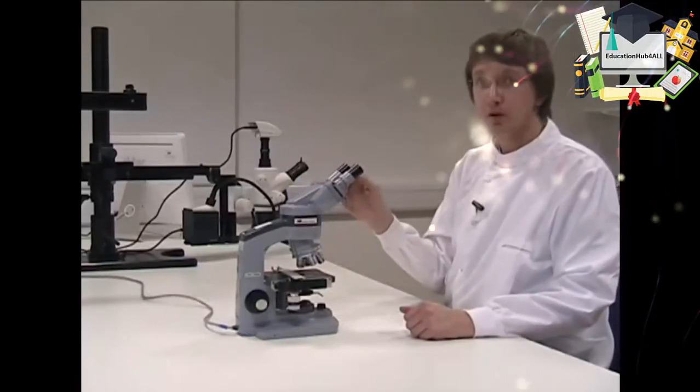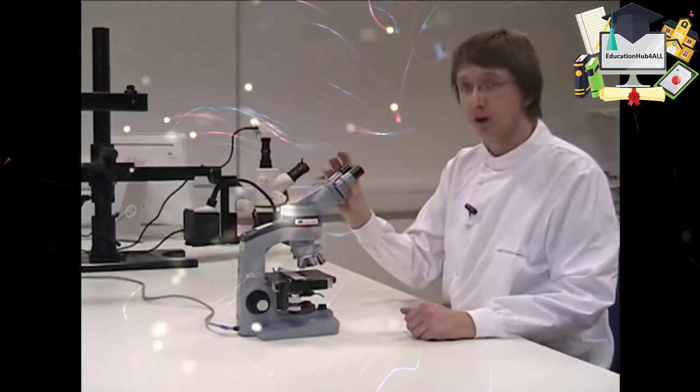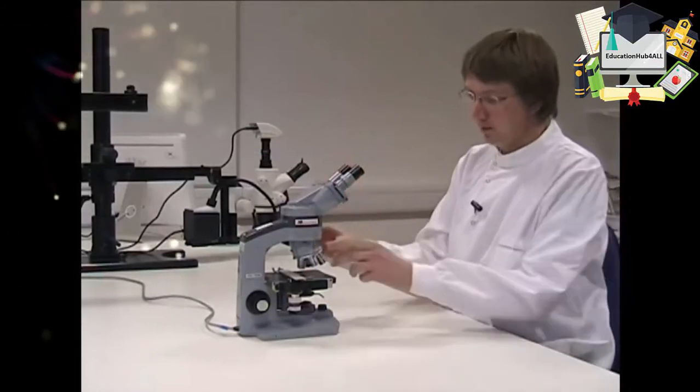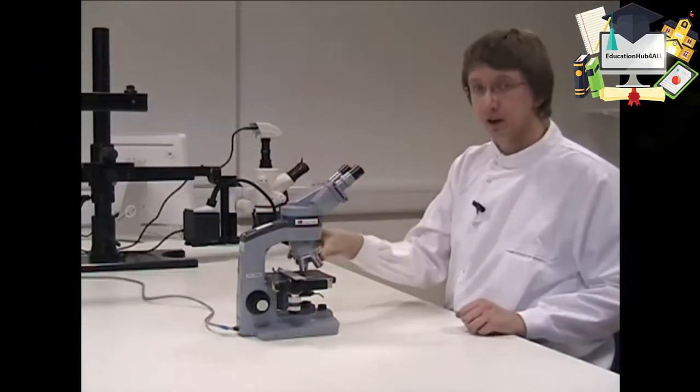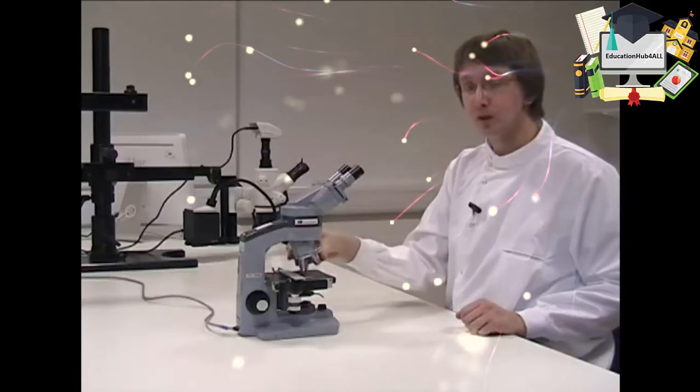So let's start by looking at the components of the microscope. At the top you have the eyepieces. Below them are the four objective lenses. Each of these lenses magnifies the image by a different amount.